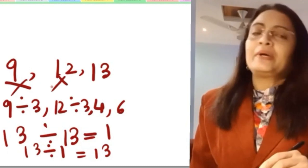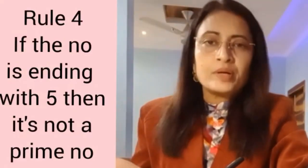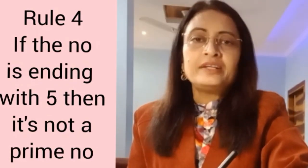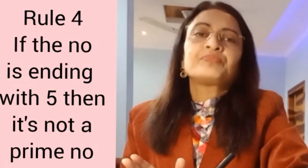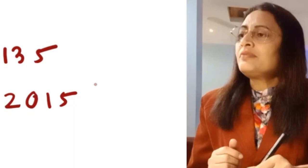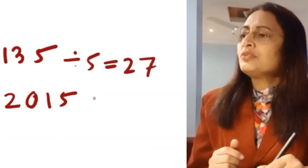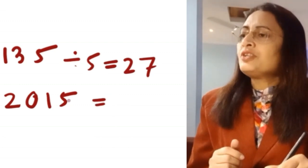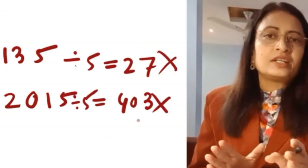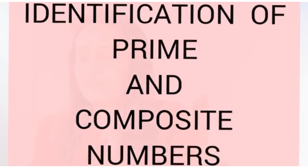Another tip: if the ending digit of a number is 5, then the number is divisible by 5 and therefore cannot be a prime number. For example, 135 is divisible by 5. Any number ending in 5 can immediately be crossed out as not a prime number — it will be a composite number.